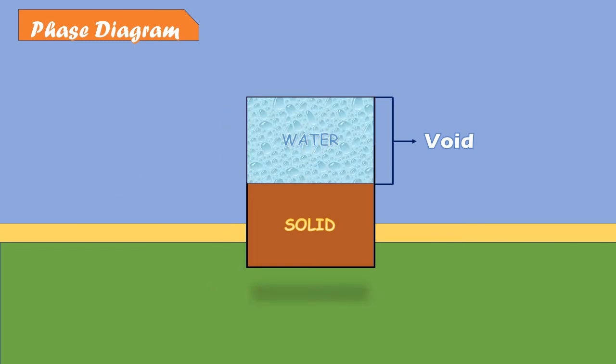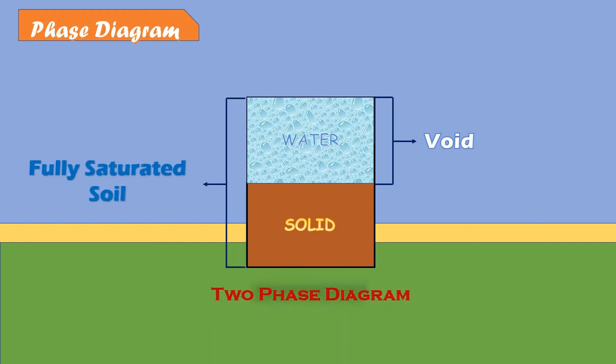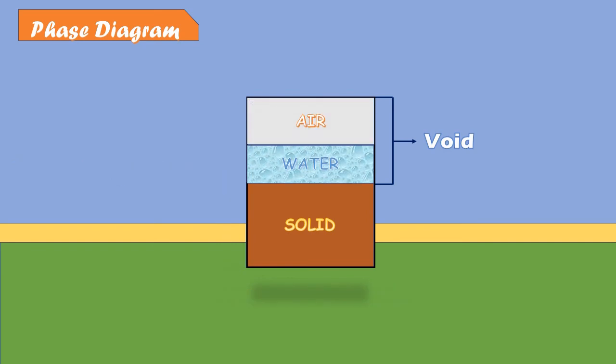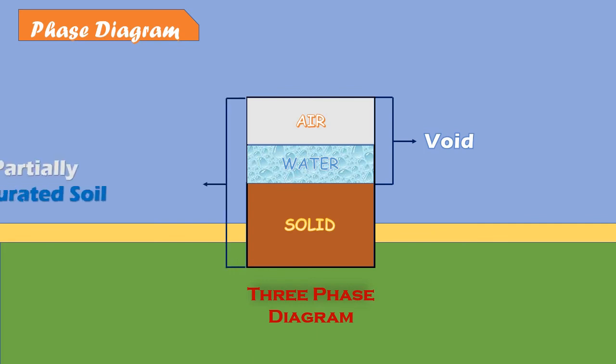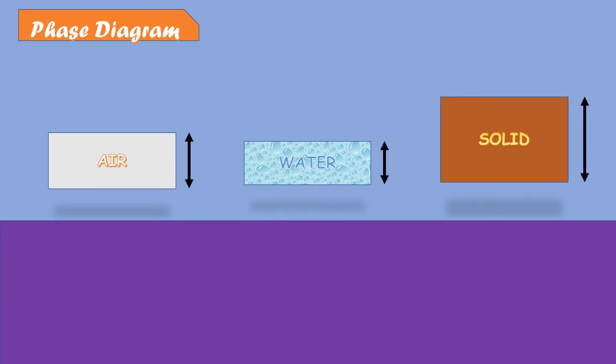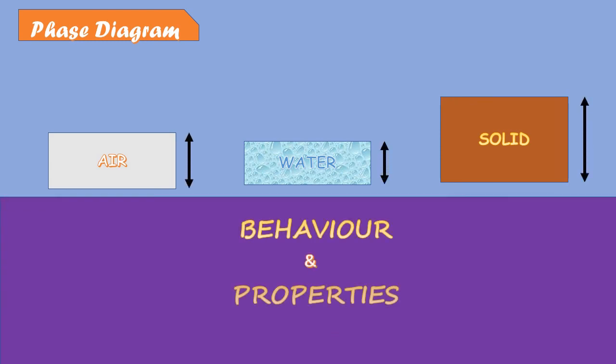If the voids are fully filled with water, there is no air phase. The diagram will also be called a two-phase diagram, and the soil mass will be fully saturated. If voids are partially filled with water and partially with air, the diagram will be called a three-phase diagram and the soil mass will be partially saturated. It is the relative proportion of the three constituents and their interaction that govern the behavior and properties of the soil.